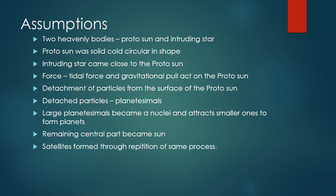Assumptions: What were the assumptions in this theory? Two heavenly bodies were involved: the proto-sun and an intruding star. The proto-sun was solid, cold, and circular in shape. The intruding star came close to the proto-sun.